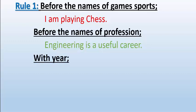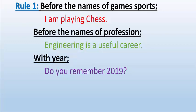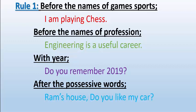Next is with years. For example, 'Do you remember 2019?' or 1998? We don't use an article before a year. Similarly, after possessive words, we don't use an article.